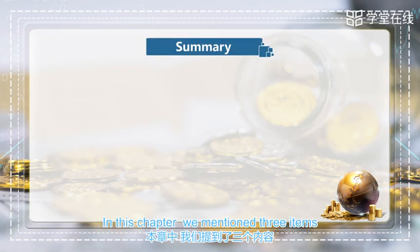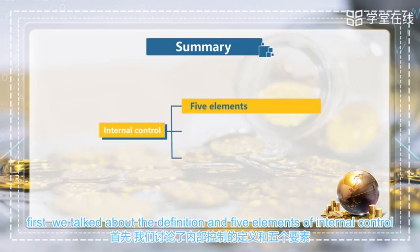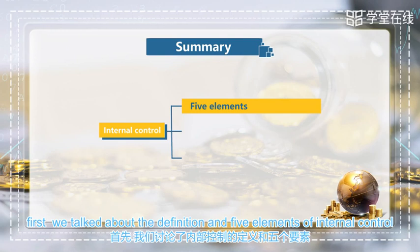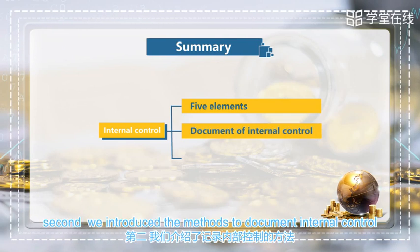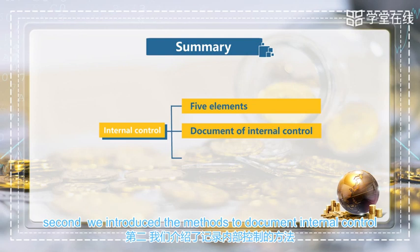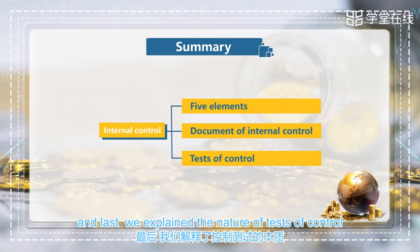In this chapter, we mentioned three items. First, we talked about the definition and five elements of internal control. Second, we introduced the methods to document internal control. And last, we explained the nature of test of control.